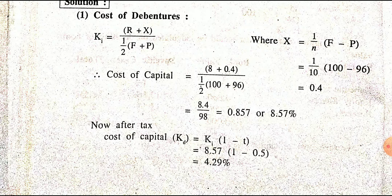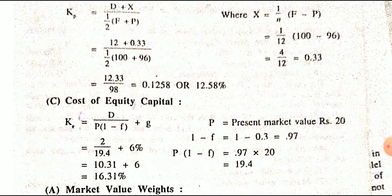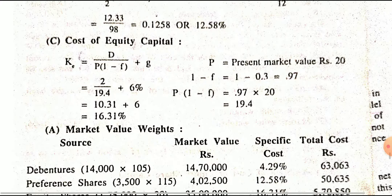For preference share, it is also a redeemable preference share, so the formula is the same as redeemable debenture — redeemable debenture and redeemable preference share use the same formula. For equity, dividend-related information uses D upon P plus G, divided by (1 minus F), where F is the flotation cost.